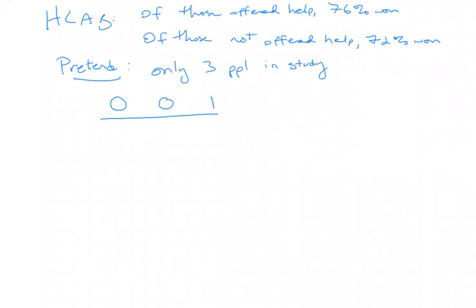Now I'm going to indicate which group each of those people was in. T refers to the treatment group — they were offered help. C refers to the control group — they were not offered help. So the first person was offered help and lost their case. The second person was not offered help and lost their case. The third person was not offered help and won their case. So that's our data.